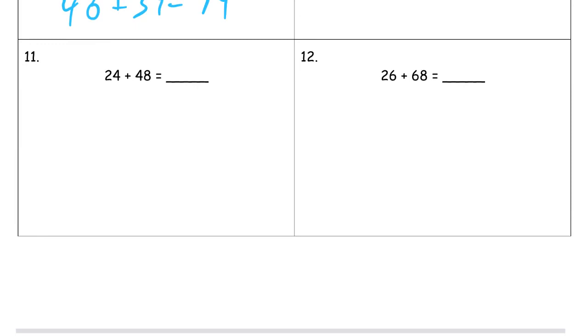24 plus 48. Well, here I got that 8, so I'm just going to use 2 and 22. 48 plus 2 is 50. And 50 plus 22 is 72.